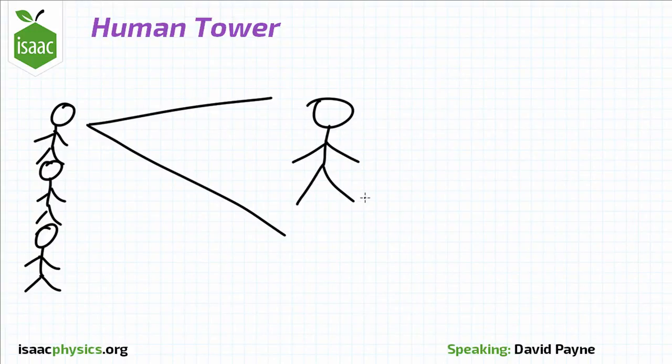There are two vertical forces acting on him. The first of these is his weight, which acts downwards and is equal to m, his mass, times g, the acceleration due to gravity. There is also an upwards reaction force from the middle acrobat.